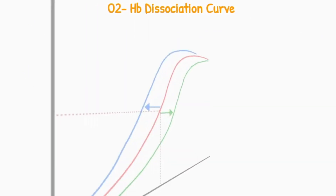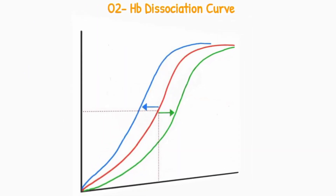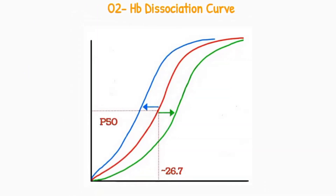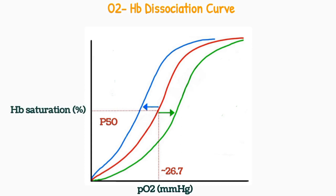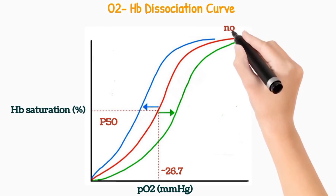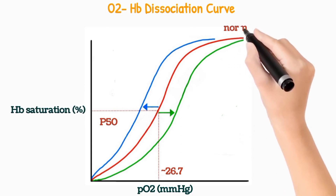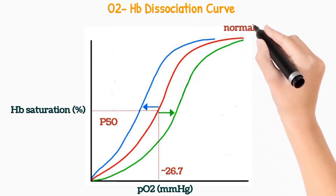The oxygen hemoglobin dissociation curve is a graphical representation of the partial pressure of oxygen taken along the x-axis and hemoglobin saturation in percentage taken along the y-axis. The shape of the curve is sigmoidal or S-shaped.